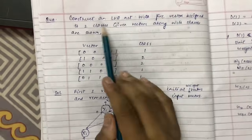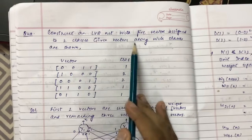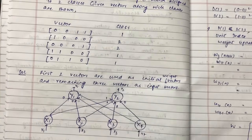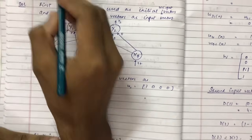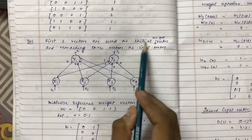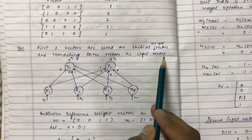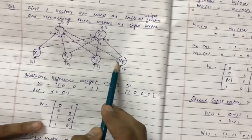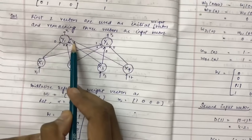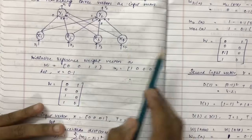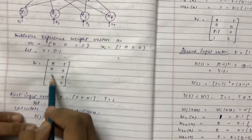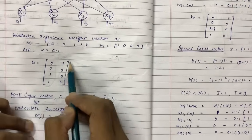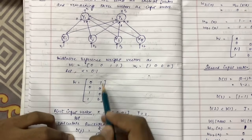Now let us see the question. Construct an LVQ net with five vectors assigned to two classes. The given vectors along with their classes are shown. We have five vectors and corresponding classes: 1, 2, 2, 1, 1. Since the number of classes is two, the first two vectors will be used as the initial weight vectors and the remaining three vectors as input vectors. The architecture has two clusters y1 and y2, with input vectors x1, x2, x3, x4 connected to cluster y1 with weights 0, 0, 1, 1 and to y2 with weights 1, 0, 0, 0. The initial weight matrix is: [0, 0, 1, 1] for y1 and [1, 0, 0, 0] for y2.